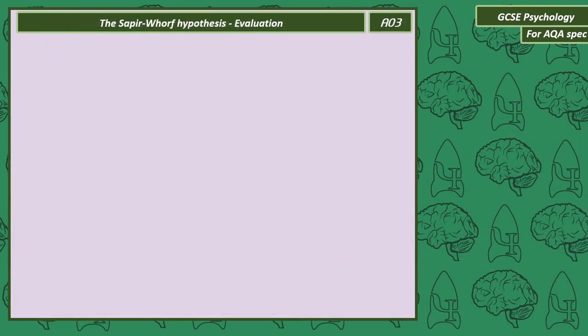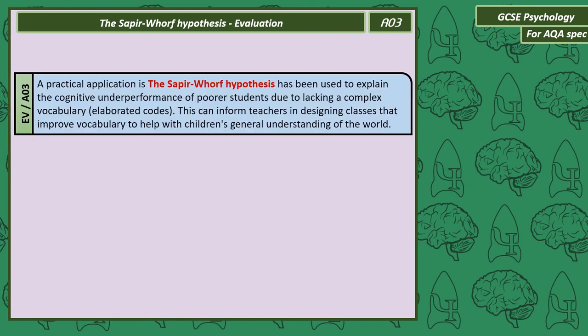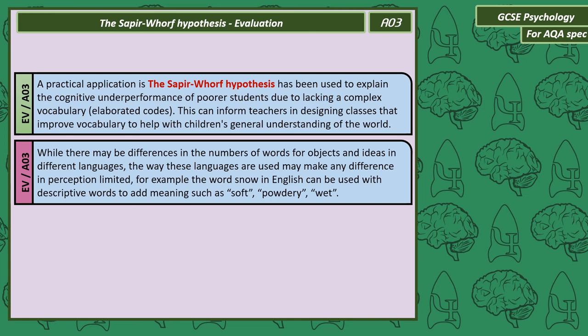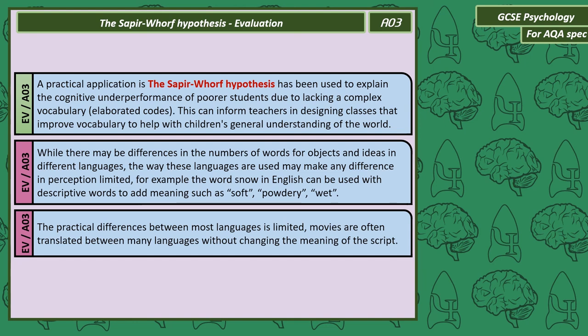Here are three additional evaluations for the Sapir-Whorf hypothesis. First, the hypothesis can be used to explain the cognitive underperformance of poorer students, due to them lacking a complex vocabulary — also known as an elaborated code. This knowledge can inform teachers in designing classes that improve vocabulary to help children with general understanding of the world. Additionally, while there may be many differences in the number of words for objects across languages, the use of descriptive modifiers — such as soft, powdery or wet combined with the word snow in English — may limit any practical difference in perception.